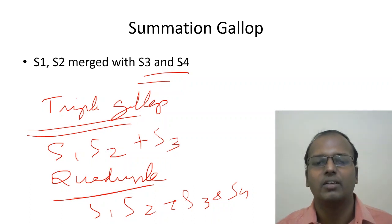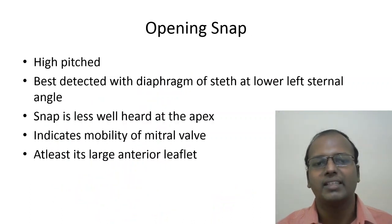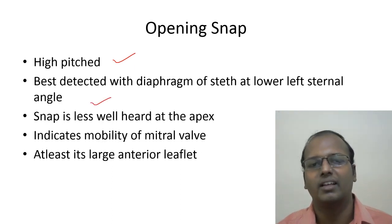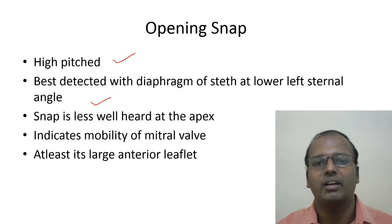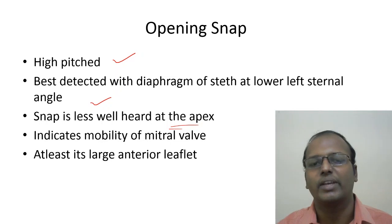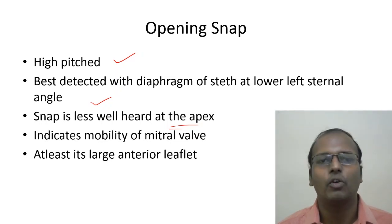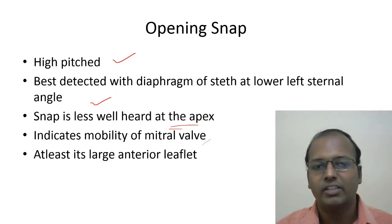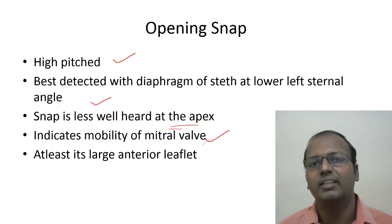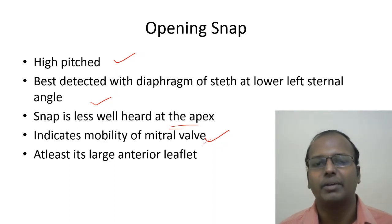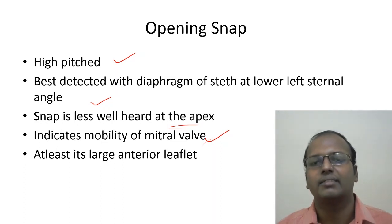Opening snap is a high-pitched sound, best heard with the diaphragm at the lower left sternal border or slightly medial to the apex. It indicates the mitral valve is mobile and non-calcified — the same implication as a loud S1 in mitral stenosis. Both loud S1 and opening snap require a pliable, non-calcified mitral leaflet to be produced.